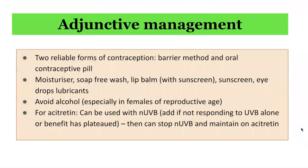When prescribing acitretin or isotretinoin, we should recommend two reliable forms of contraception — a barrier method as well as a combined oral contraceptive pill. Given significant dryness, cheilitis, and skin side effects, general skin care measures should be emphasized including moisturizer, soap-free wash, lip balm, sunscreen, sun protection, eye drops, and lubricants. Alcohol should be avoided, particularly in females of reproductive age, as it can interact with medication and convert acitretin to etretinate. Acitretin can also be used with narrow-band UVB in retinoid UVB treatment, particularly for psoriasis.